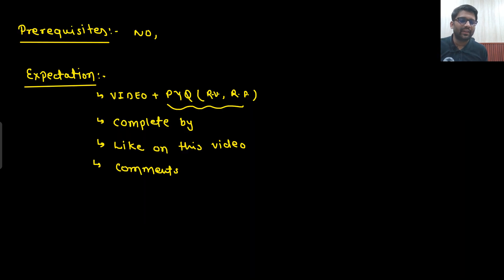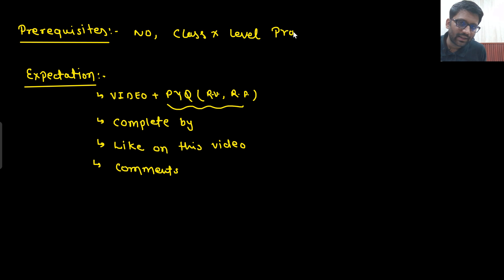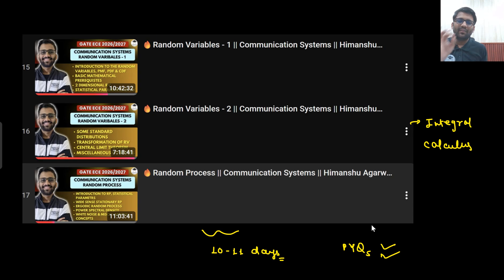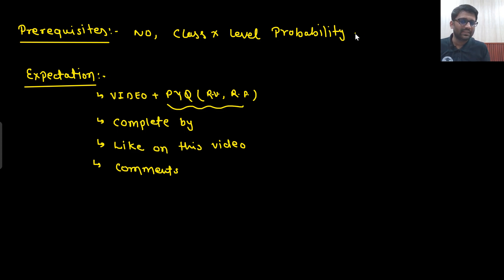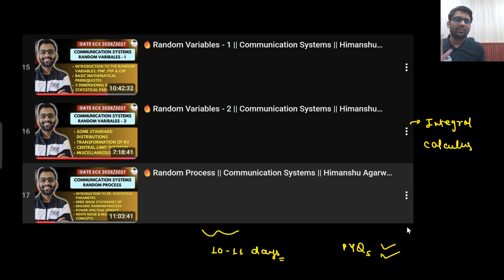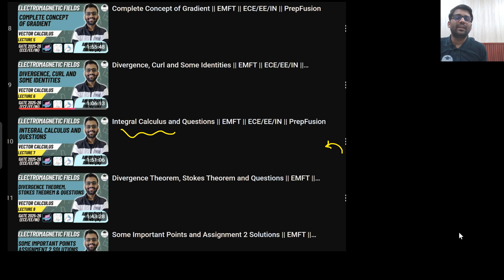One prerequisite I would say is class 10th level probability. That would be the prerequisite. Probability will be used in the communication system. But I will not be telling you what the meaning of probability is — you should know it already. If I toss a coin, probability of getting a head is 1/2. If I toss a dice, probability of getting an even number is 1/2. These are the basics — class 10 level probability is the prerequisite for communication system. Integral calculus will be taught here, so that's covered.